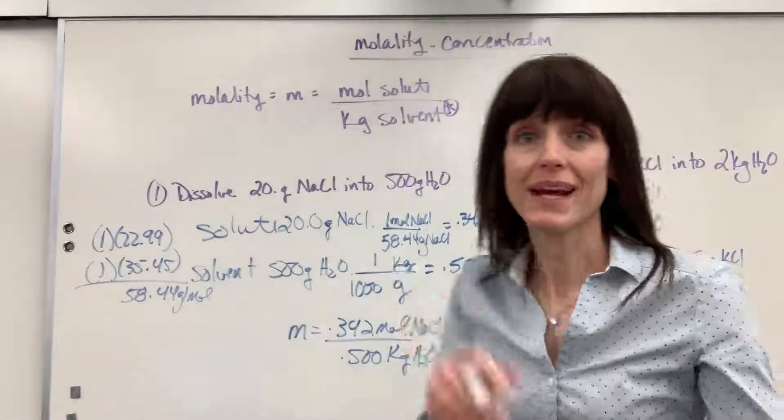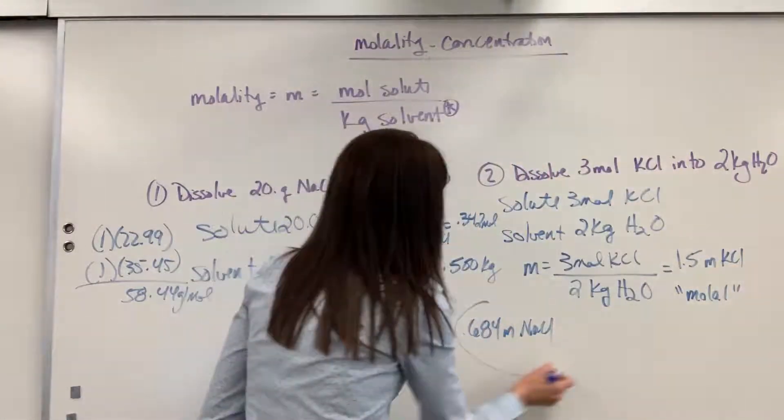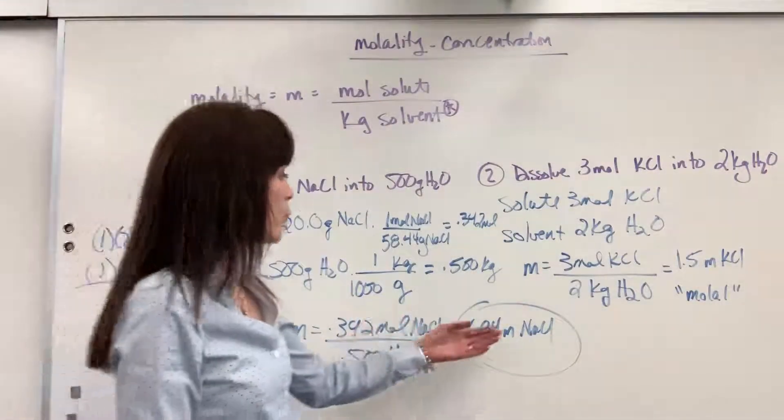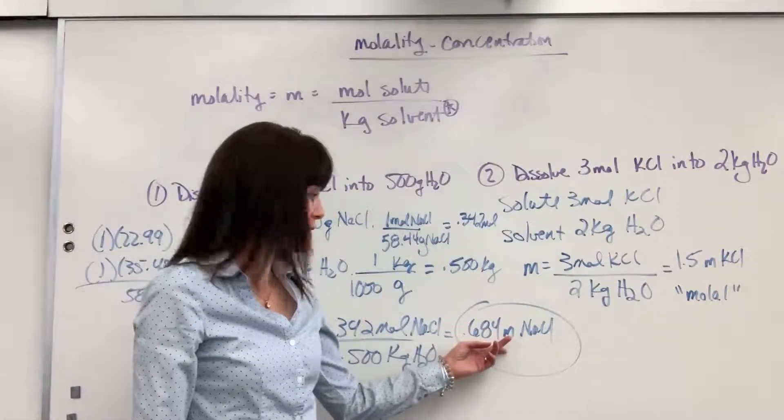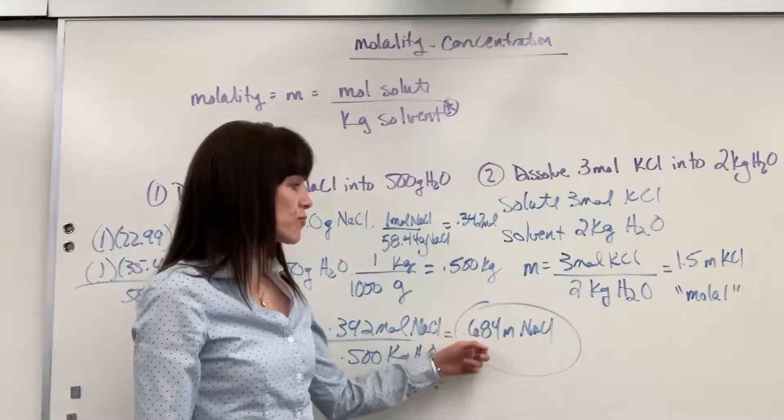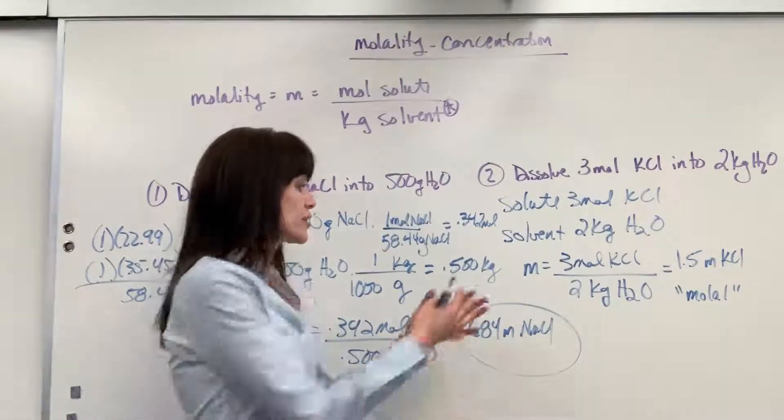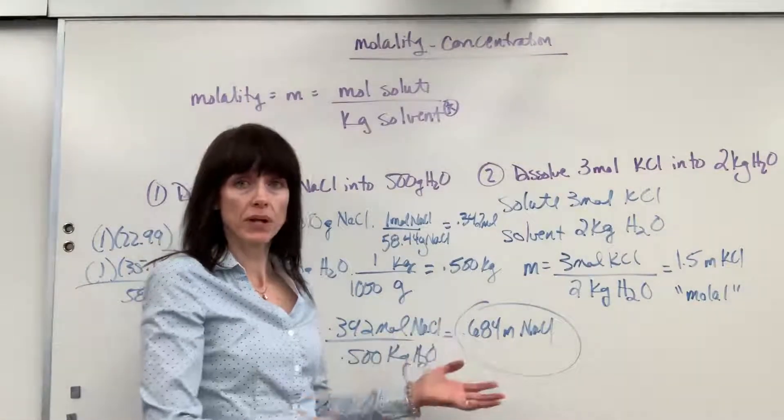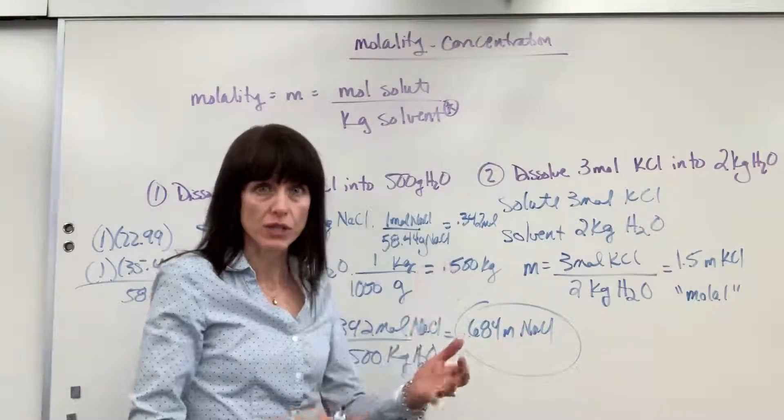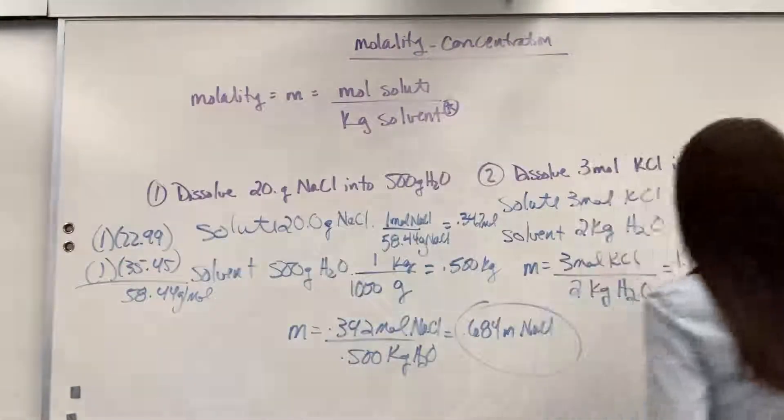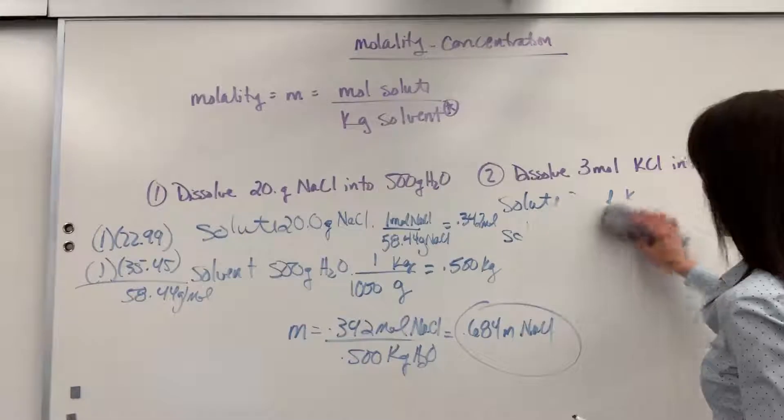Now, what that tells me, I got 0.684 molal sodium chloride. It means for every one kilogram of water, we have 0.684 moles. So let me give this to you. Let's say that you're given this. How do you break it apart? Always, when you're dealing with concentrations, break apart the units into the numerator and the denominator. This is how I would break this apart.